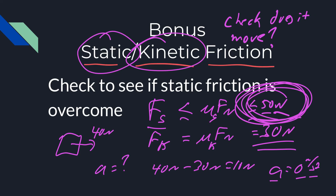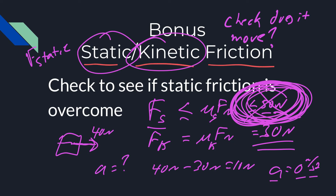One last caveat: if you push with 40 newtons and they ask how much static friction there is, you might calculate 50 newtons — but the object can't push back. If you push with 40 and the maximum static is 50, the object doesn't move backwards. Static means it's not moving, so the correct answer is 40 newtons of static friction.